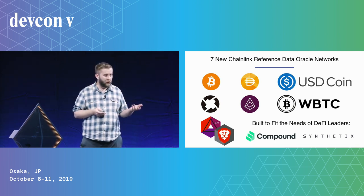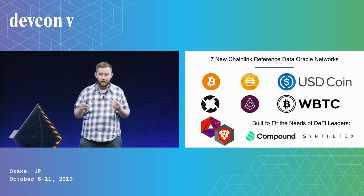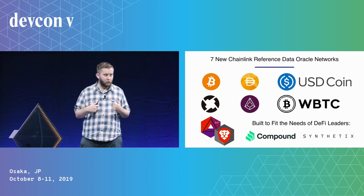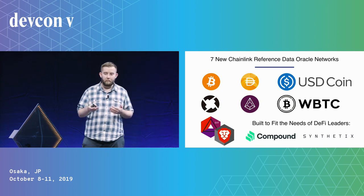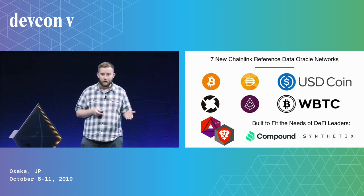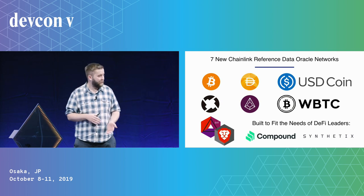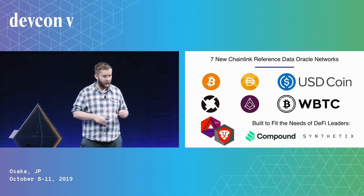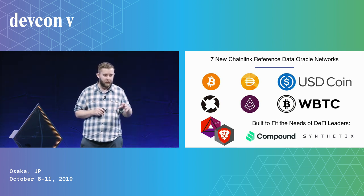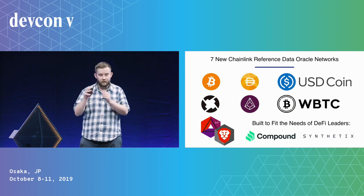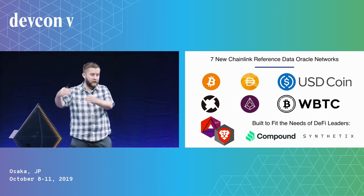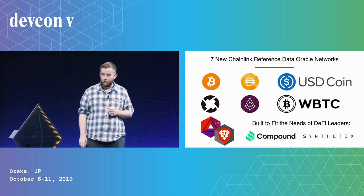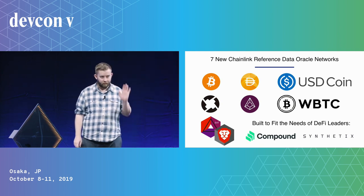If you have a DeFi project or a need for a reference data price on-chain, we want to support you. Our goal as a company is to make our users succeed by giving them access to reliable data. Chainlink is here to enable smart contract developers to build any kind of externally connected or next-generation contract. We're very collaborative — we have a huge integration engineering and support staff to help you build these contracts and possibly even create a great reference data network starting out for your use case, but then getting used by other DeFi projects as well. Thank you very much, and I'm looking forward to seeing you all at the conference.